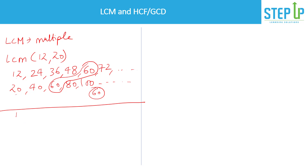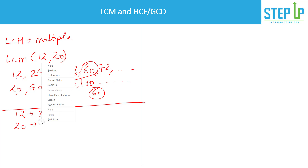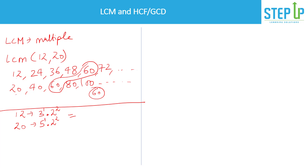We can also calculate the LCM using prime factorization. Writing 12 as 3¹ × 2² and 20 as 5¹ × 2², in LCM we take all prime factors at their highest powers. The highest power of 2 is 2², of 3 is 3¹, and of 5 is 5¹. So LCM = 2² × 3 × 5 = 4 × 3 × 5 = 60. This confirms our earlier answer.